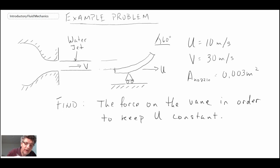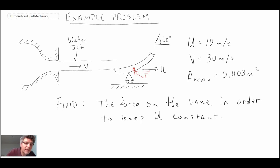We're told to find the force on the vane in order to keep U constant. So essentially, what force is required on the vane — we don't know exactly which direction it's going in, but there will be some force. The purpose is to find what's needed for U to be constant, which is a case of a control volume moving at constant velocity, because we're going to put the control volume around the vane.